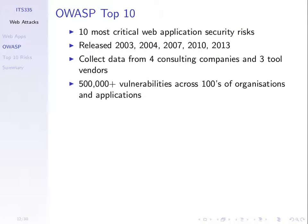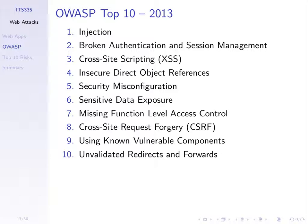OWASP develops a top ten web application security risks, released every few years — the last one I've looked at is 2013. They collect data from different companies about what real attacks have been performed — half a million different risks or vulnerabilities across many companies — and rank which are most severe. They come up with a top ten of what they think are the most important web security risks to address in developing applications.